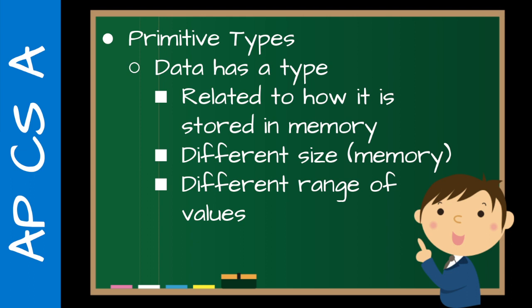So, Primitive Types. You need to understand that data has a type. In Java, once a data type is declared, it is permanent — you cannot change it. You have to choose the correct one carefully. The reason it has a type is related to how it is stored in the computer's memory. Different types have different sizes, and as a programmer we want to be efficient and not use too much memory. Each type also has a different range of values — the bigger the type, the bigger the range.